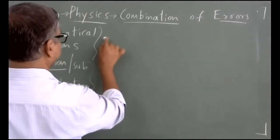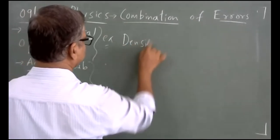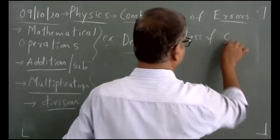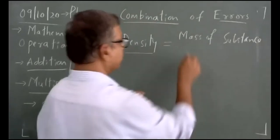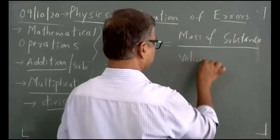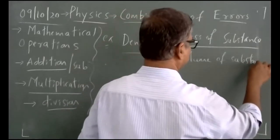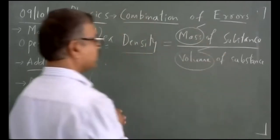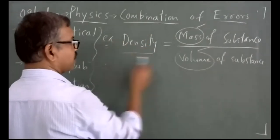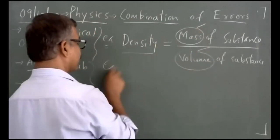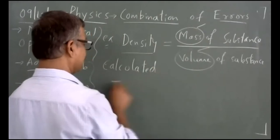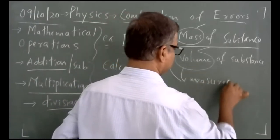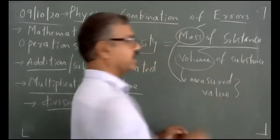Let me take the book example. Density is a physical quantity defined as mass of a substance divided by volume of a substance. If there is error in the mass measurement and if there is error in the volume measurement, then what about the error in the density calculated? This ratio will give you a calculated value.